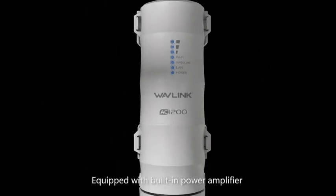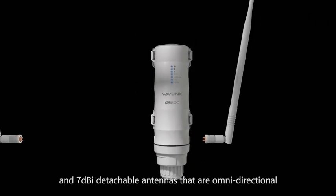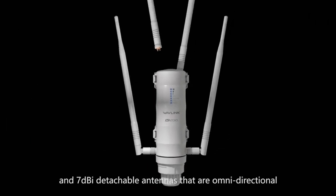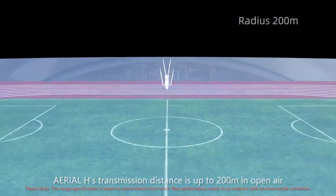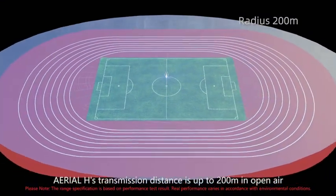Equipped with built-in power amplifier and 7 dBi detachable antennas that are omnidirectional, Arial Edge's transmission distance is up to 200 meters in open air.